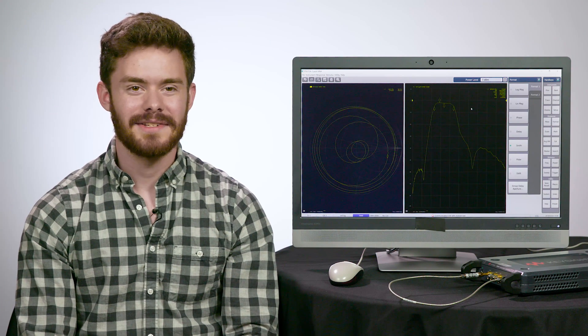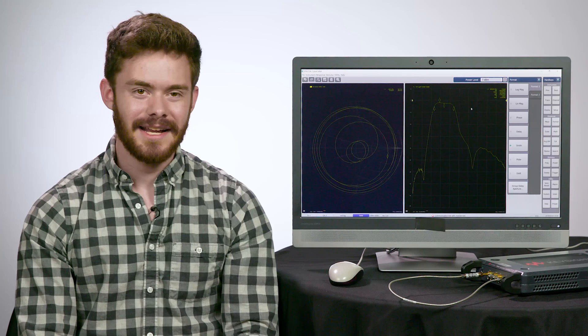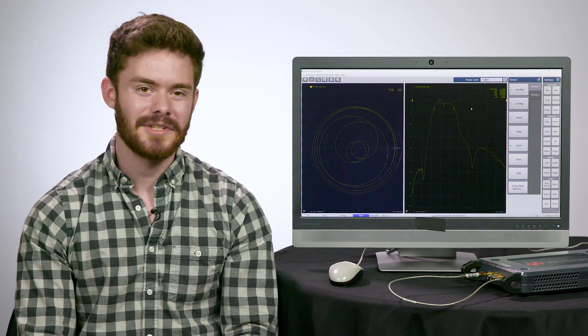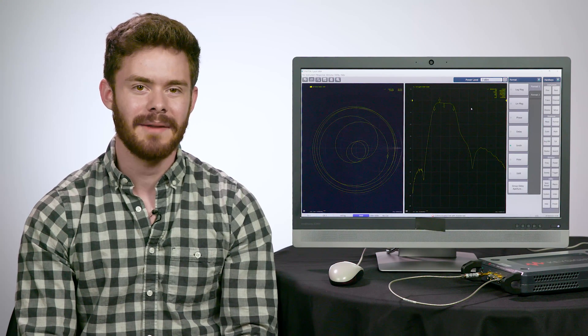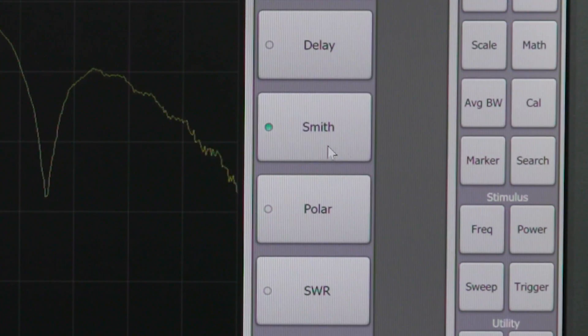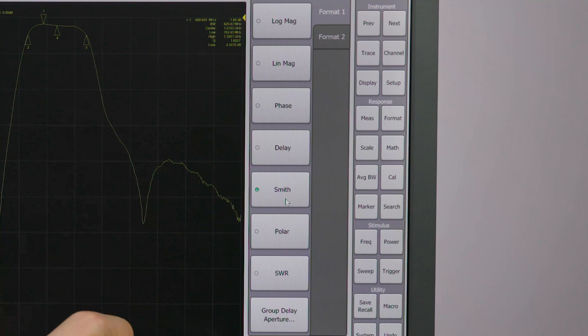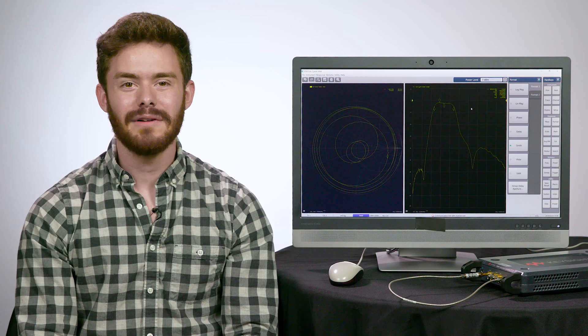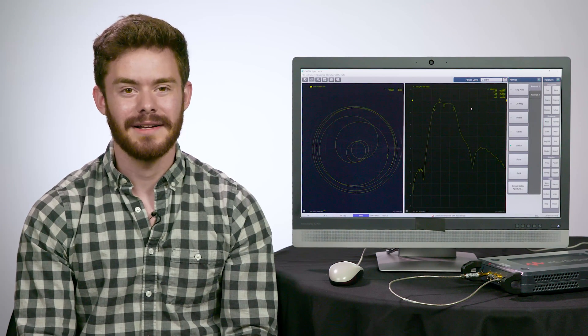You can also view these traces in different formats. Let's say I'd like to see the Smith chart for this S11 trace so that I can characterize the matching of this bandpass filter we're testing. So I'll select Format and Smith. You can see all the different formats available, the standard log mag, a phase chart, polar, delay, and so on. These different views help to characterize the different aspects of your device.